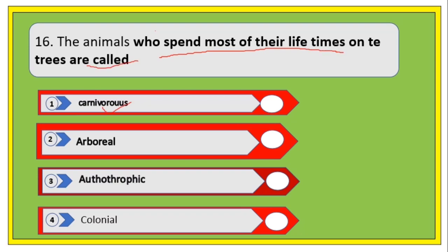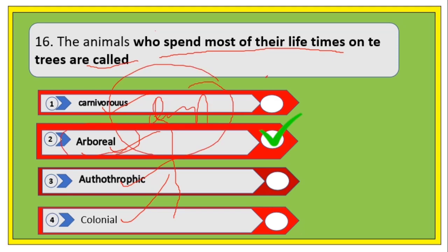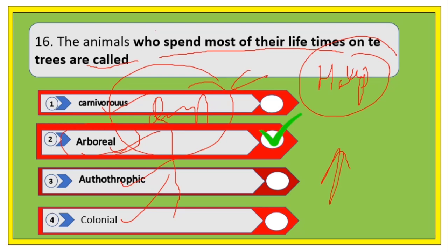Animals who spend most of their lifetimes in trees are called — options are carnivorous, arboreal, orthopractical, and colonial. The right answer is arboreal. Try to attempt all MCQ questions in the playlist to help in exams. Thank you for joining — have a nice day.